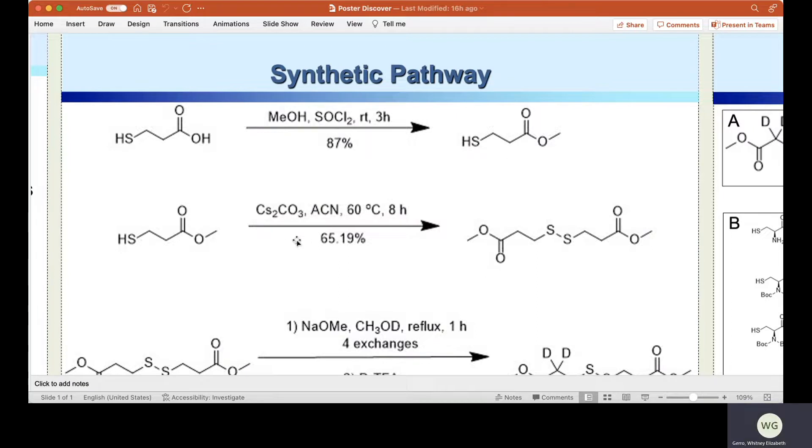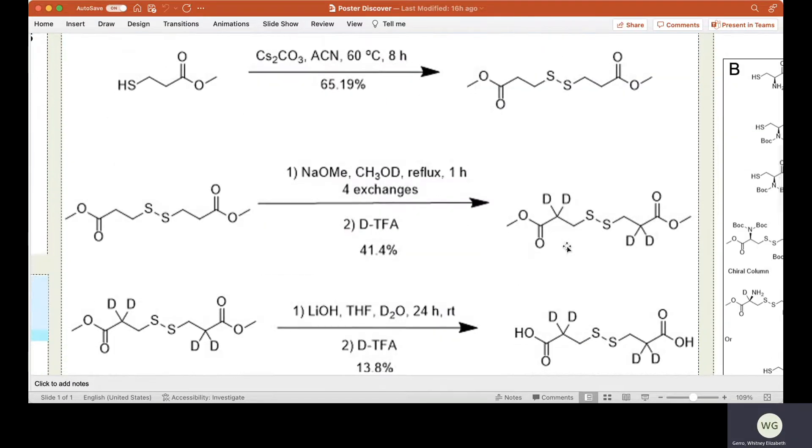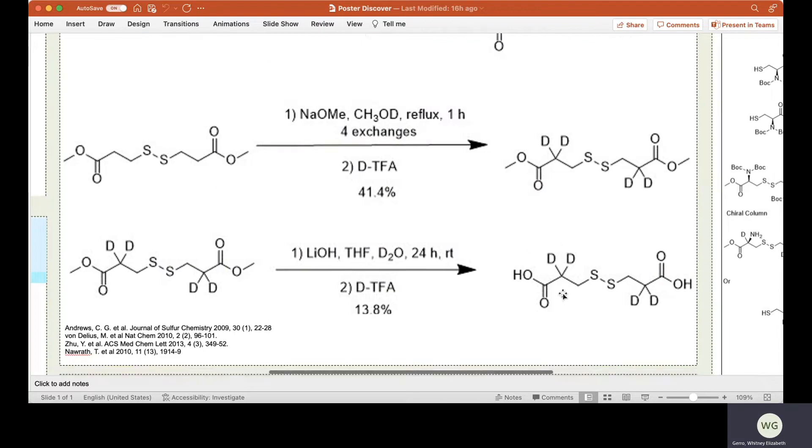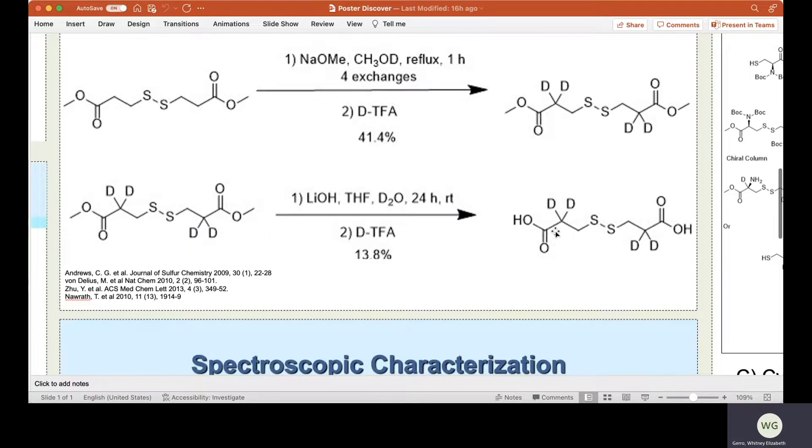Next, we used basic conditions to create the disulfide bond. The disulfide bond is also a natural side product of deuteration that we decided to get ahead of by making it part of our starting material. We then performed the deuteration and subsequent hydrolysis back to a diacid that has been deuterated four times.